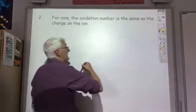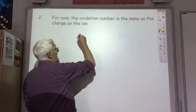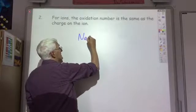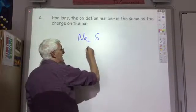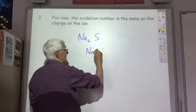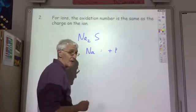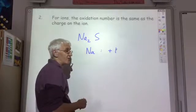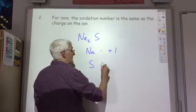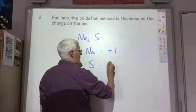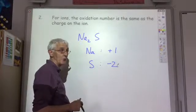To do another example — sodium sulphide. The oxidation state of the sodium is plus one, because the sodium ions have a charge of 1+. And the sulphur has a charge of 2-, so it has an oxidation state of minus two.